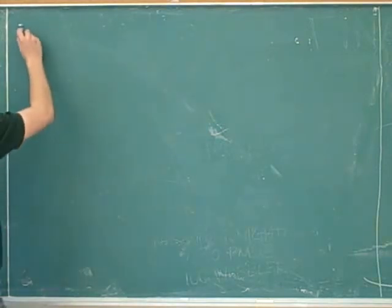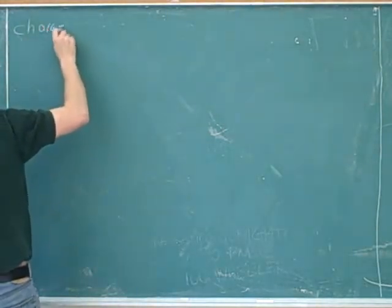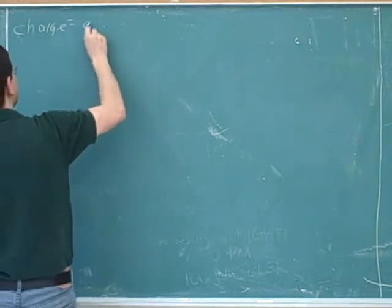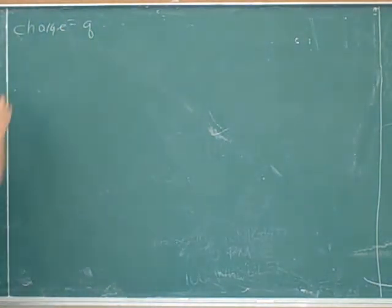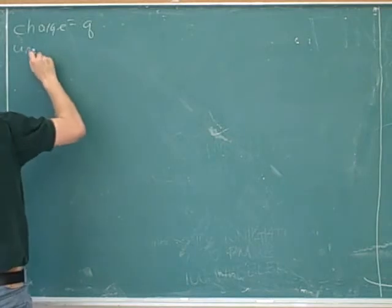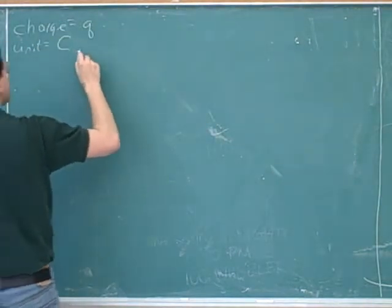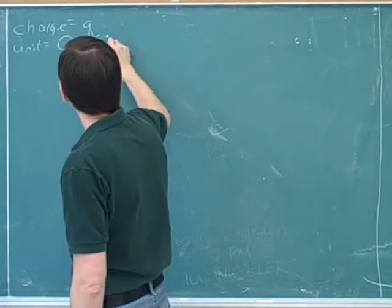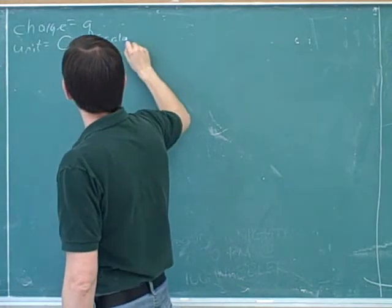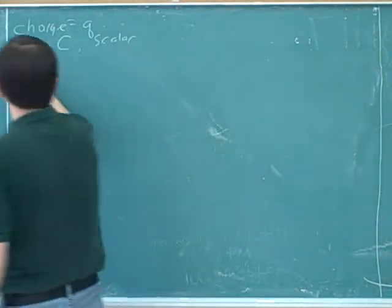Do you remember what is the symbol for charge? Q — either capital or lowercase q. And what is the unit for charge? Coulomb. And is that a vector or a scalar? It's a scalar, because you wouldn't talk about 5 coulombs north — it doesn't have a direction.